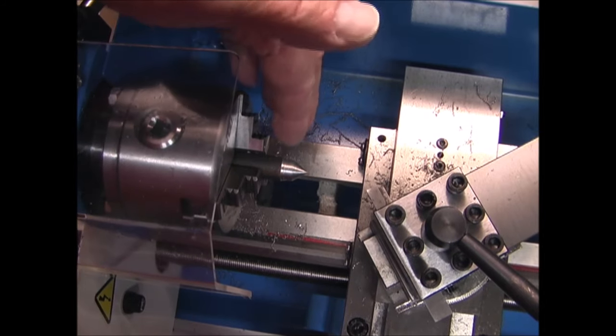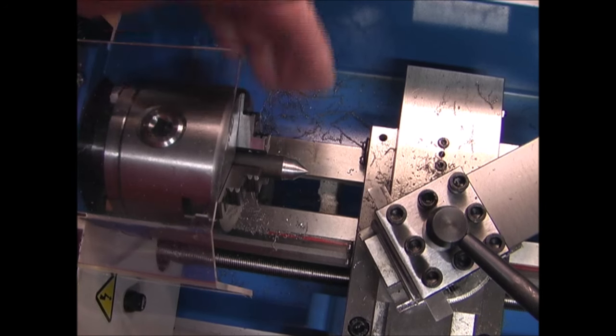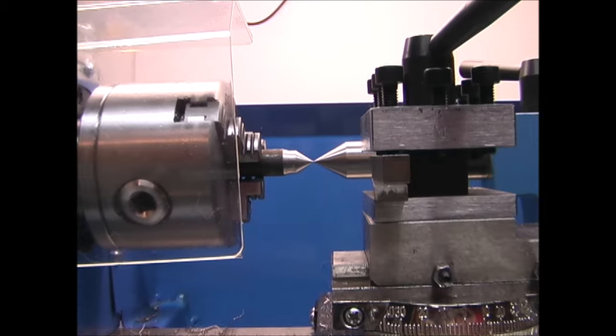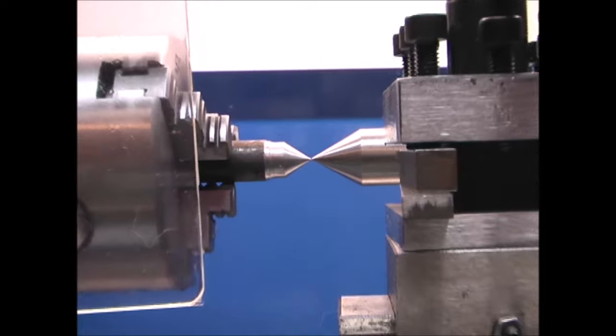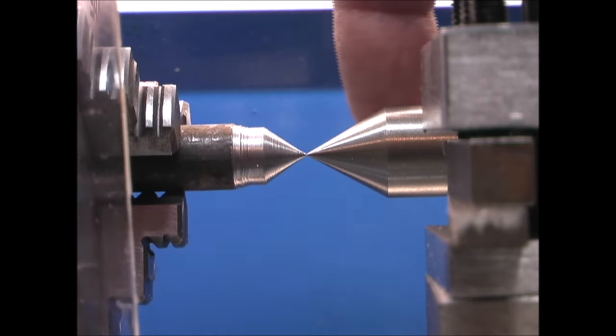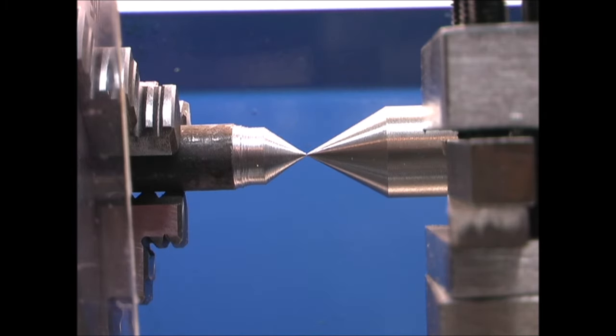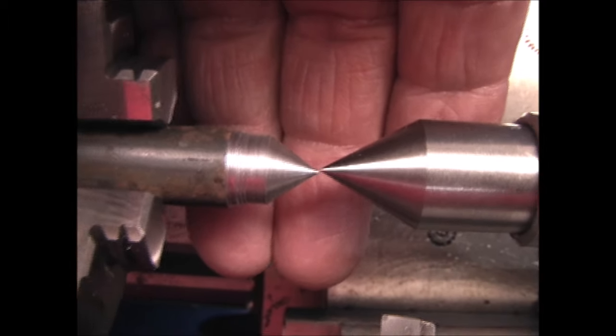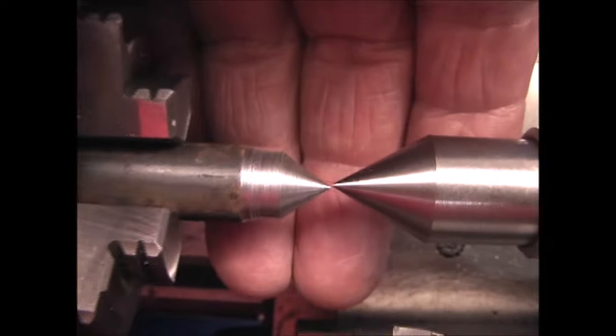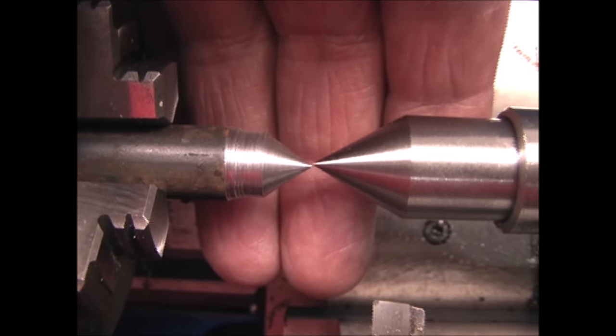Now I've turned down the end of this shaft to a point so I can check the alignment of the tailstock. Looking at the two points, from the point on the end of the shaft that I turned and the point on the center, up and down or vertically they appear to be centered. That doesn't look too bad, but looking down from the top it's off alignment a little front to back, so I'll have to adjust that.